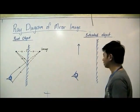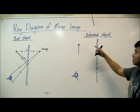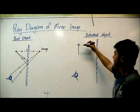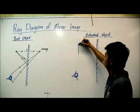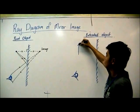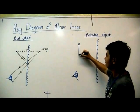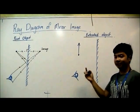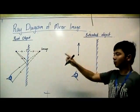Now let's look at an extended object. So how do we draw the ray diagram? Same thing. We can see this as two point objects. One point object on top and one point object below. So we will repeat the steps for point object two times.